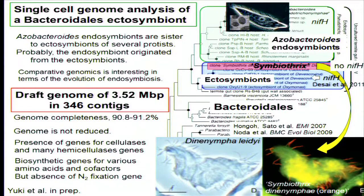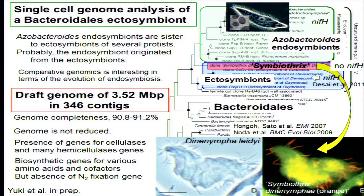The target is an ectosymbiont belonging to the order Bacteroidales. This ectosymbiont is sister to the endosymbiotic Bacteroidetes. We designated it as Candidatus Bacteroidales. We consider the endosymbiont probably originated from the ectosymbiont, so comparative genome analysis is interesting. We determined a draft genome of 3.5 megabases, and the predicted genome completeness is approximately 90%.